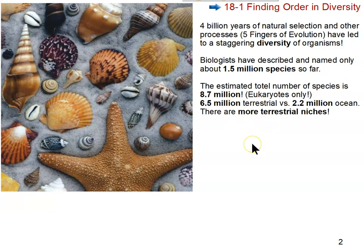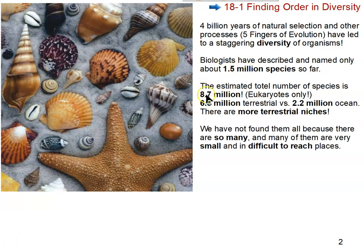A niche simply refers to a way of making a living — if there's a way to make a living, life will find a way to do it. The reason we've only found 1.5 million out of an estimated 8.7 million is that there are so many of them, many are in places difficult to reach like the ocean floor or deep in the earth's crust, and even multicellular eukaryotes can be microscopic.